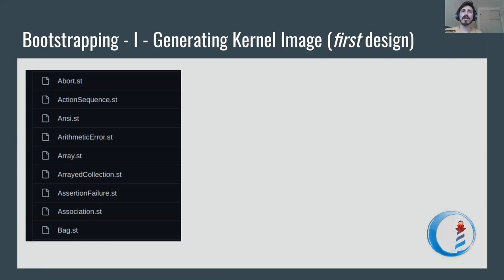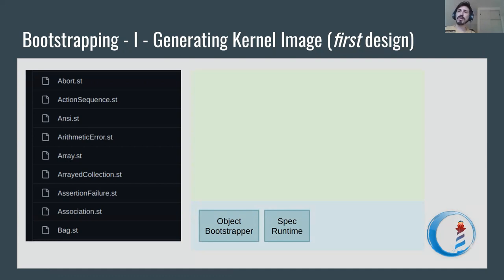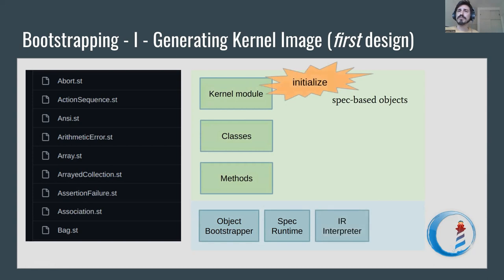In the first iteration of that design, we would take the files of V in a Tonel format, read them, generate an image, and use a bootstrapper to generate native code. In Faro, we load this specification, we have a class which is a bootstrapper, and we had to initialize the objects in the image, so we did a small interpreter to initialize the objects there.